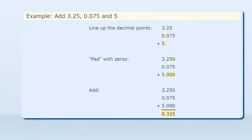Example: add 3.25, 0.075 and 5. Line up the decimal points, pad with zeros, then add. The answer is 8.325.